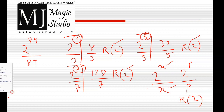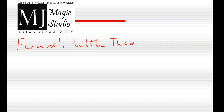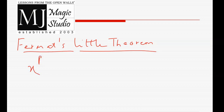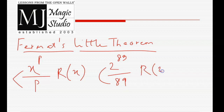The same thing is given by Fermat's Little Theorem. Fermat's Little Theorem states that when x raised to the power p, where p is a prime number, is divided by p — given that x and p are co-primes — the remainder is x. So for 2 to the power 89 divided by 89: 89 is a prime number, and 2 and 89 are co-primes, so the remainder is simply 2.